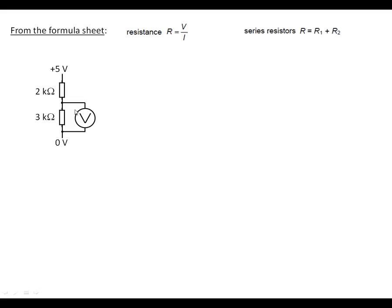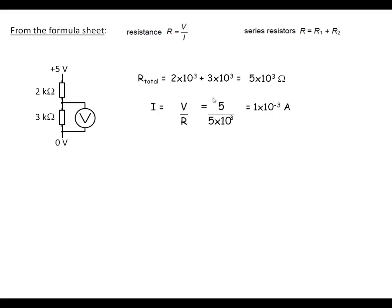Now the method to do first of all is to work out the total resistance. We've got the formula on the formula sheet here. So our total — add the two resistors, two K and three K together — we end up with five kilohm. Second stage, we know that we've got five volts across the total resistance. We know we've got five K in total, so we can work out the current. Using rearranging this equation, we end up with I equals V over R. Substitute the numbers in and we end up with one milliamp flowing through the whole lot.